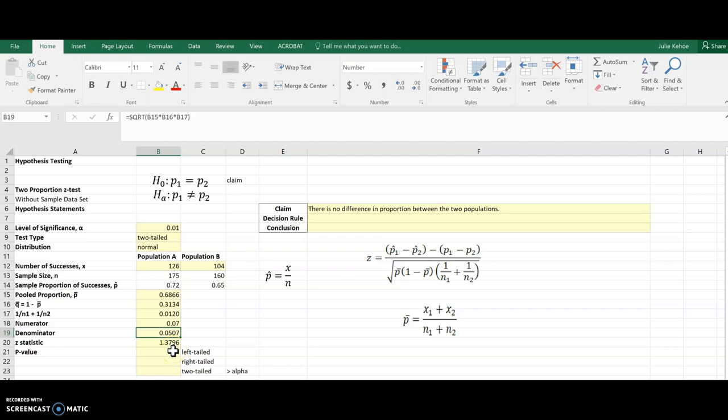All right so now I have my z-score. All I need to do is start calculating those p-values. I'm going to do all three tails just in case I'm dealing with a different type of test. So I'm using the normal distribution, so for the area to the left of a z-score it's NORM.S.DIST and it is a z-score and it's cumulative because I want everything to the left. And there is my p-value if I was doing a left-tailed test.